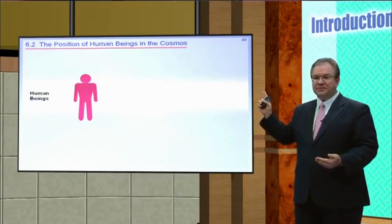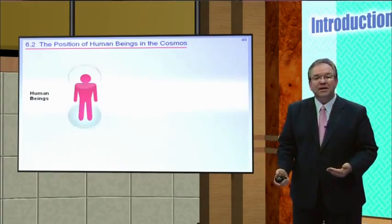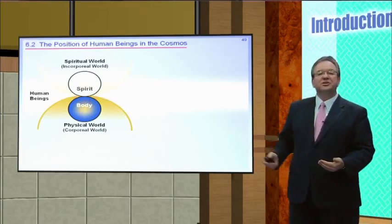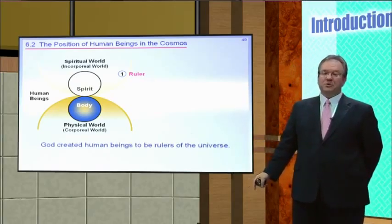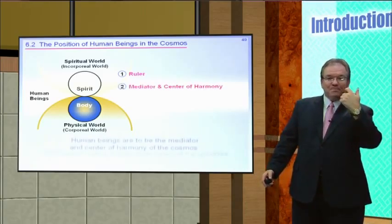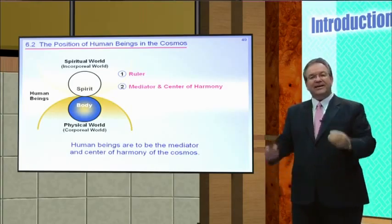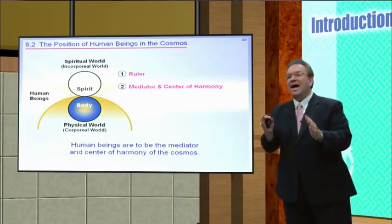Human beings were created by God to be rulers of the universe and to be the mediator and center of harmony connecting the two aspects of the cosmos. Out of all physical beings, only humans are self-aware, have an eternal nature, can connect to the meaning and value of life, and relate to the spiritual dimension. At the same time, out of all spiritual beings, only humans can reproduce, develop creativity and technology, and take rulership over the physical world.